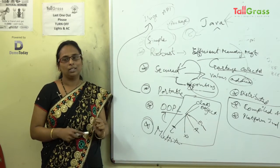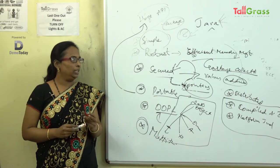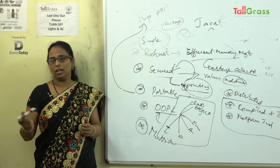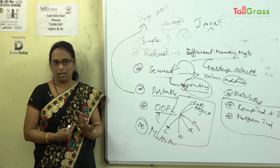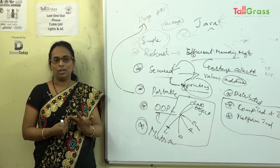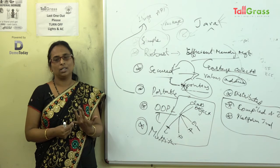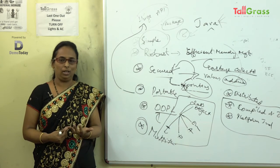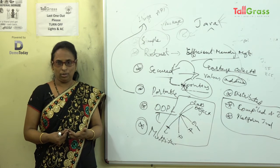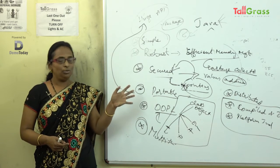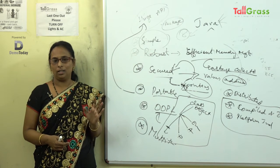Let me explain compilation and interpretation. Compilation means once you write a program in your high-level language — we have generations: first is machine language, second is assembly language, third is high-level language — you need a translator to translate your high-level program to machine language, because the system can only understand machine level. That work is done by the compiler.